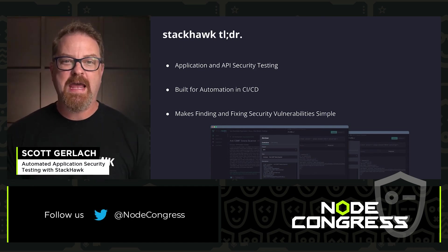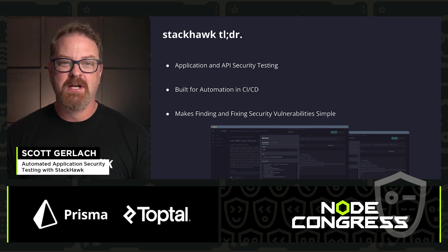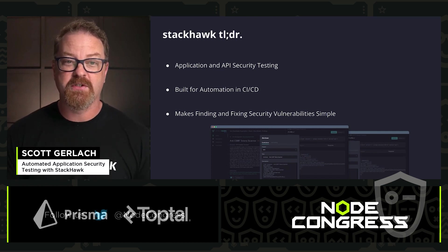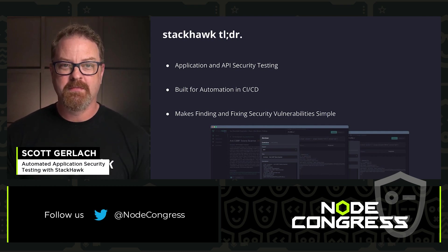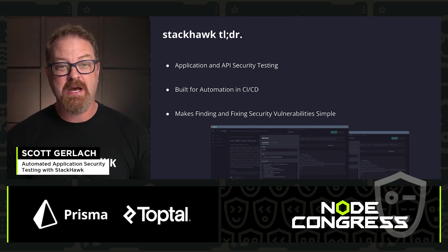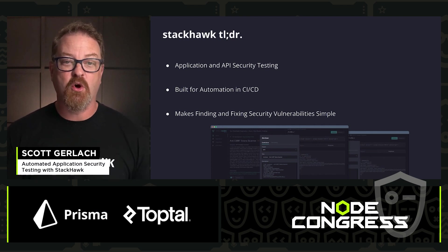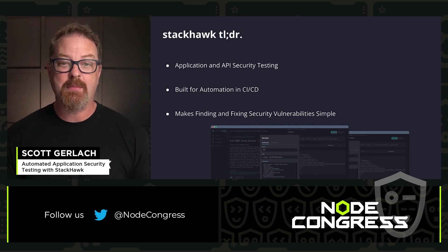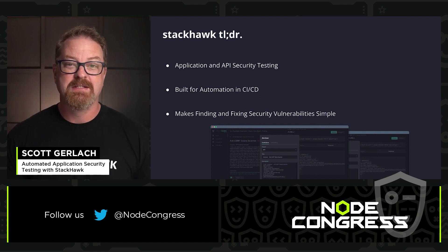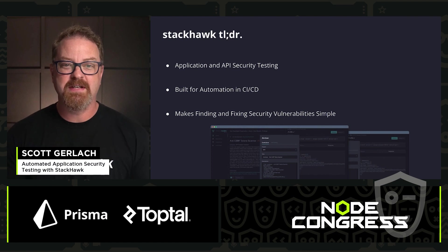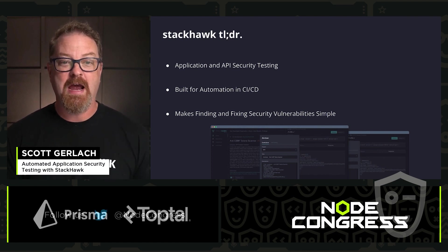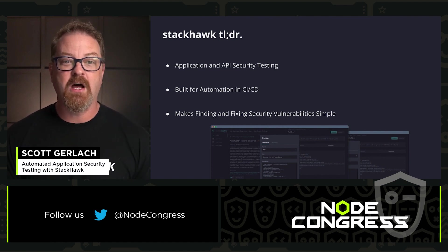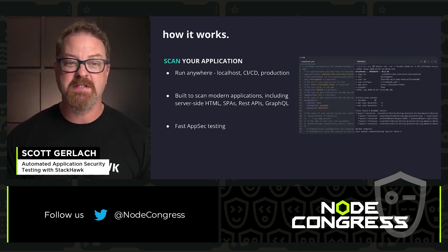StackHawk is a dynamic application security testing tool. You can use it to test your running HTTP applications and API endpoints for security bugs and keep them from becoming vulnerable. You can use StackHawk to run active security tests on your running REST API, GraphQL API, SOAP API, server-side application, and single-page applications. StackHawk was built for automation and CI/CD to be part of your robust testing strategy for your application development lifecycle. It also makes finding, understanding, and fixing security bugs easy.